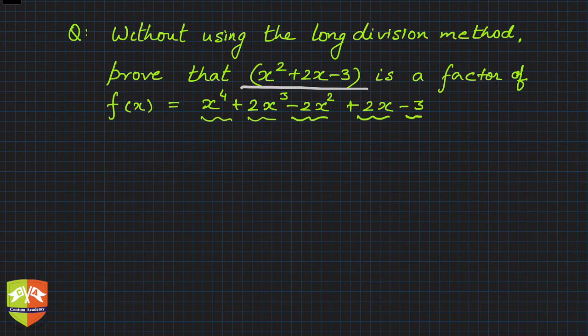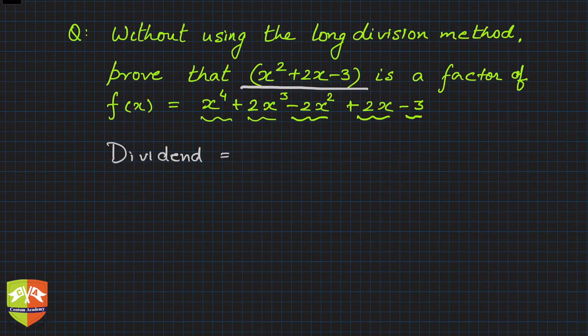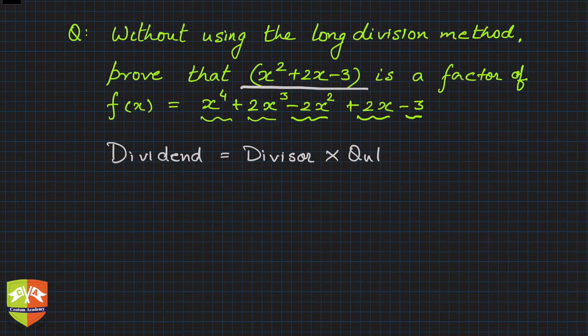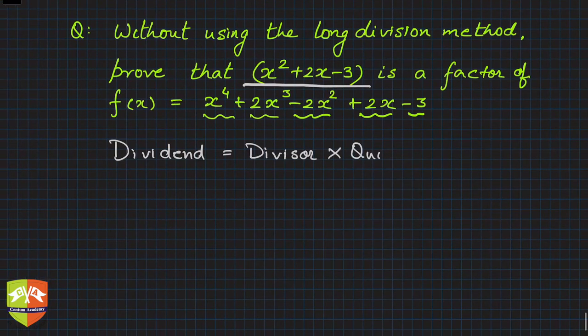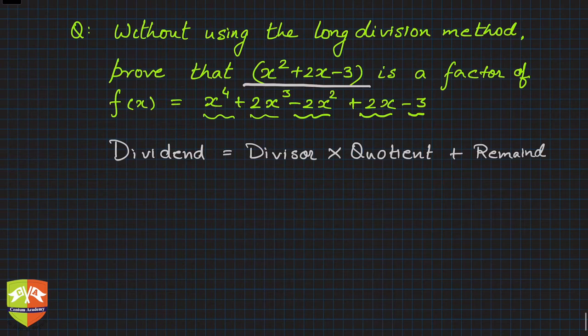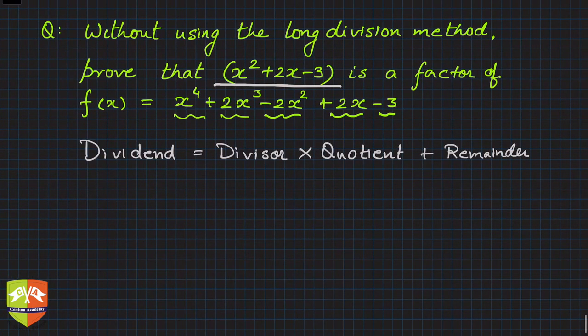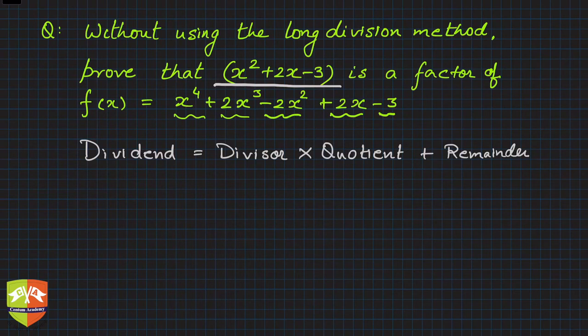Since long division is not allowed, we use the fundamental equation: dividend = divisor × quotient + remainder. This relationship holds for both numbers and polynomials, as established in previous sessions. We can use it to our advantage to prove what the question demands — namely, how to show that something is a factor of something else.